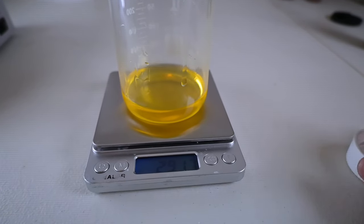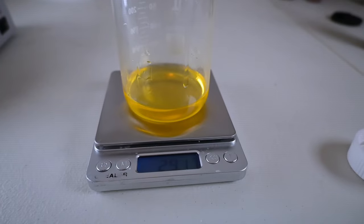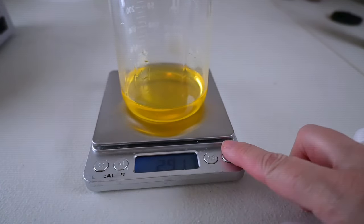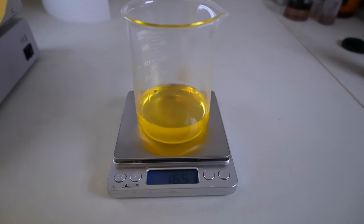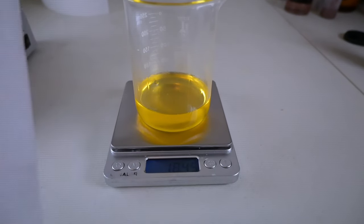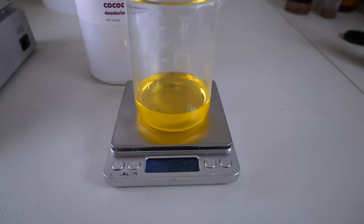The next ingredient is sweet almond oil and we are going to use 18.35 grams. I'm going to tare. Next we're going to use 4.19 grams of cocoa butter.